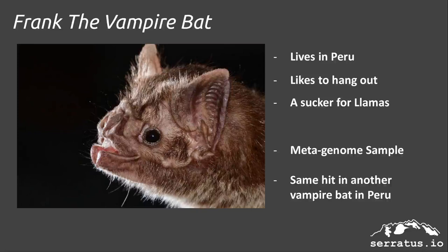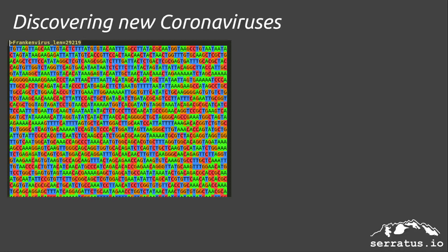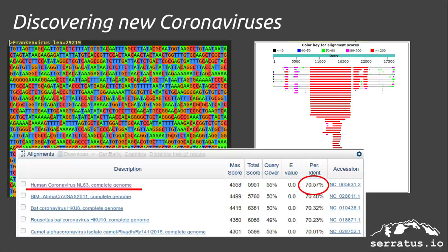To give you an example of the kind of discoveries that can be made by Ceratis, I'd like to introduce you to Frank the Bat. Frank lives in Peru, likes to hang out, and is a total sucker for llamas. In a metagenomic sample from Frank, we were able to discover a completely new species of coronavirus. When we BLASTed this coronavirus sequence, its closest ancestor was human coronavirus NL63 at 70% identity — that's about a few hundred years' divergence, so it's pretty far out there. This is highly encouraging because it means we are not only finding known species of coronavirus, we also have the ability to find completely new species.